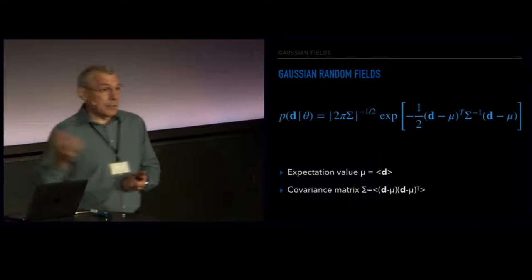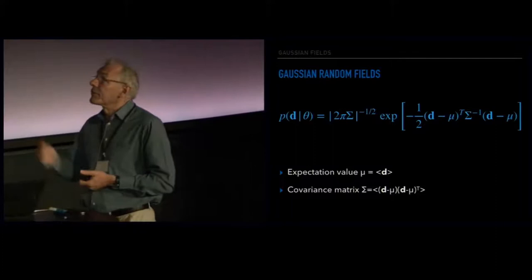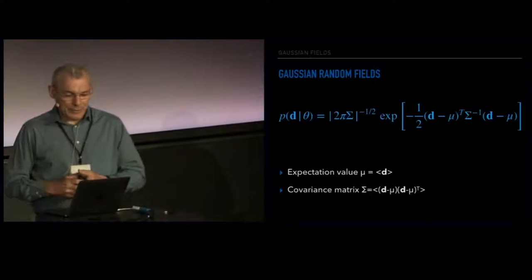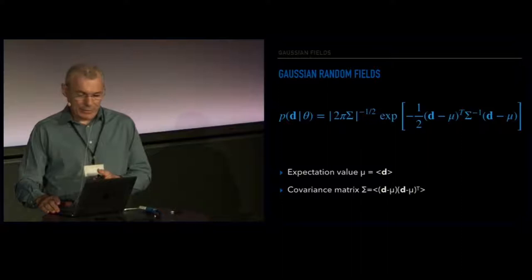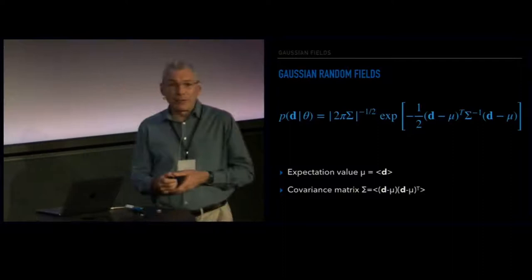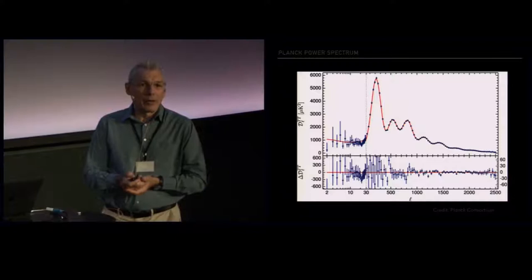For a Gaussian random field, the only things you need to know are the mean and the covariance matrix. If the data vector is the temperature fluctuations, the mean is zero. So all of the information comes from the covariance matrix. For the CMB, all of the statistical properties are in the two-point function — either the correlation function or its harmonic transform, the power spectrum. Here's the famous CMB power spectrum with the best-fitting ΛCDM theoretical model going nicely through the data.